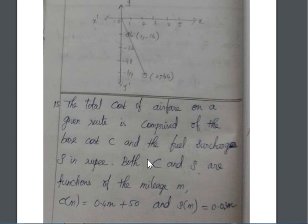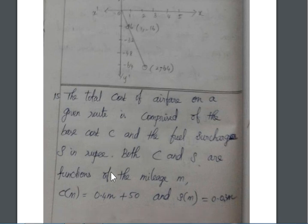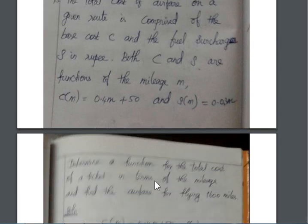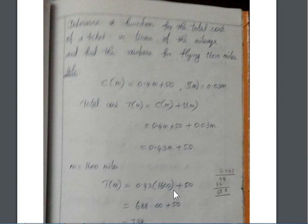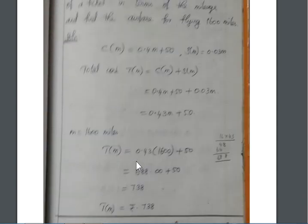Next, 15th question. The total cost of airfare on a given route is comprised of the base cost and the fuel surcharge S in rupees. Here, the cost of ticket for airfare is both base cost as well as the fuel cost. That is given in C(M) and S(M). Therefore, write a function for the total cost of a ticket in terms of mileage, and find the airfare for flying 1,600 miles. So, you know that base cost as well as the fuel cost. Total cost is nothing but both things. Adding both things. So, C(M) plus S(M). Get down the answer 0.43M plus 50. And then, here we want to calculate the airfare for 1,600 miles. Here, M represents the miles. Instead of M, you apply the value 1,600. Get down the answer rupees 738. That is the total cost for the airfare.